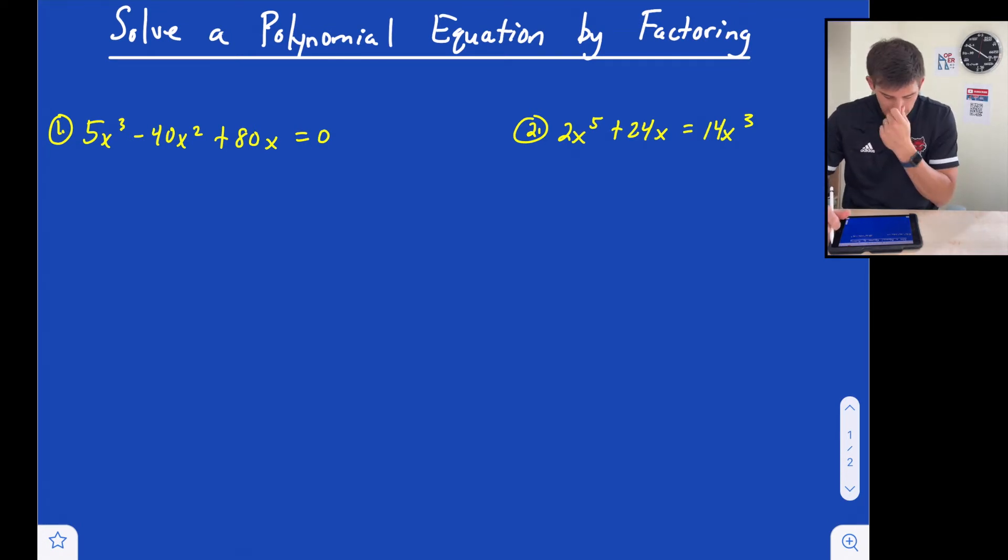We have two examples here that we're going to look at. Example number one says 5x cubed minus 40x squared plus 80x equals zero. So notice how it's equal to zero there.